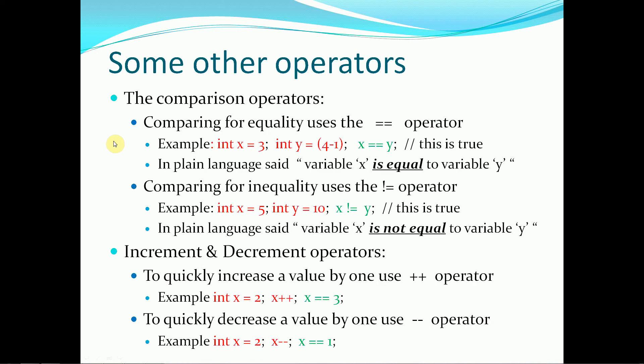Now we have a few other operators. We have the comparison operator. And comparing things for equality, we use the double equal, which I used previously. So for example, if we have an integer assigned 3, and we have another integer assigned 4 minus 1, which is also 3,